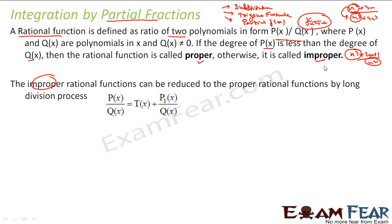So if it is in improper form, where the degree in the numerator is higher, I can convert this into proper form by division. For example, if I divide x³ + 2x + 1 by x², I will convert this into proper form. So I will get something like x plus a remainder term — and that remainder part is a proper rational function.